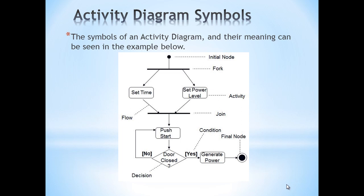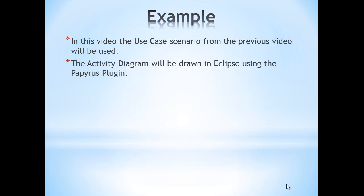The decision symbol is used to branch the flow of activities into two different paths based on selections made. For example, if the door is closed, the system can generate power; if not, the user has to push start first. The flow itself is represented by arrows between activities to indicate the sequence of events. The final node—a black circle inside a white circle—indicates the ending point of the activity diagram.